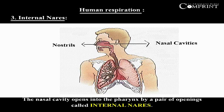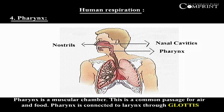Internal Nares: The nasal cavity opens into the pharynx by a pair of openings called internal nares. Pharynx: The pharynx is a muscular chamber and is a common passage for both air and food.